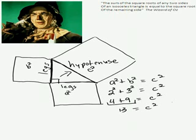And then taking the square root of each side, which is where I think the square... sorry, the scarecrow got confused. C must be the square root of 13.